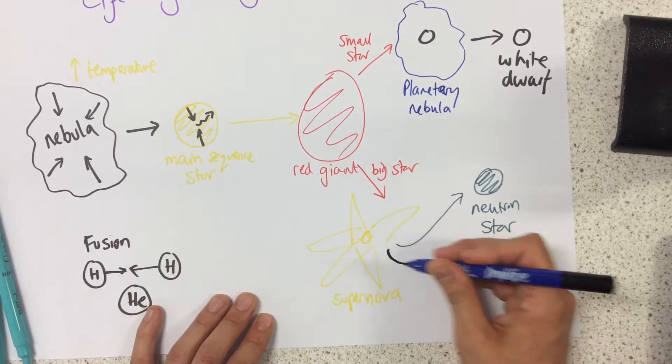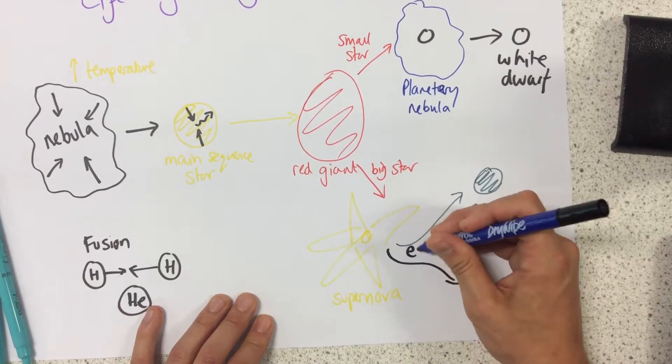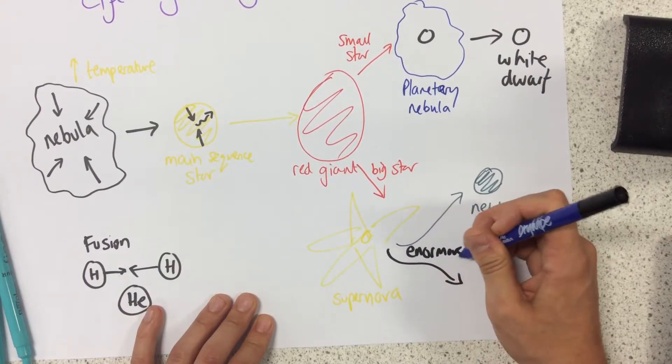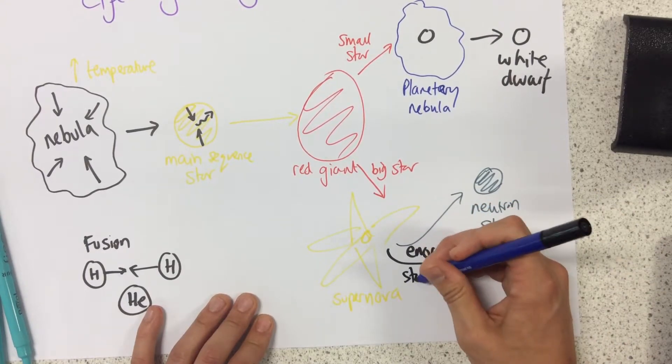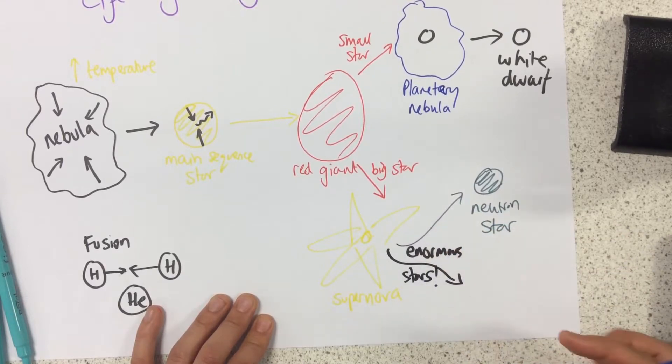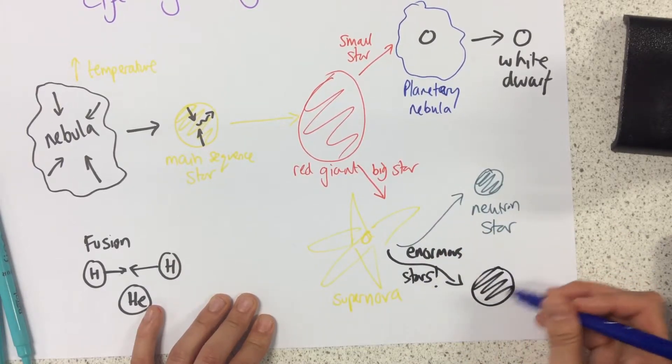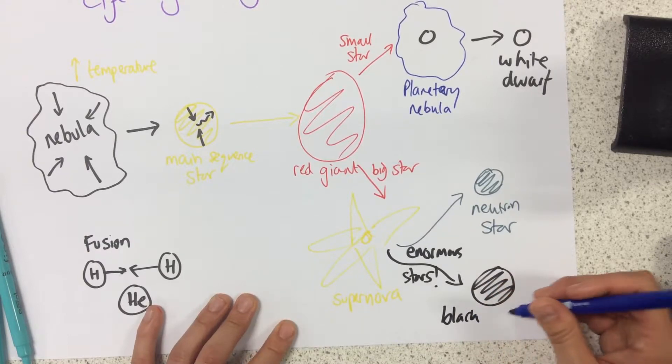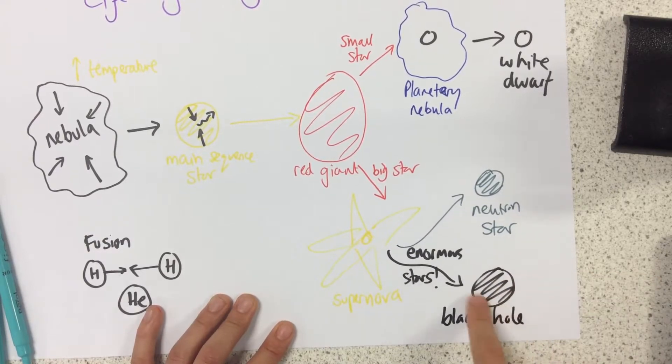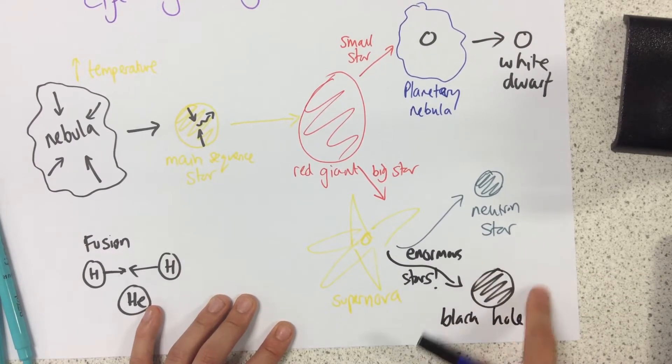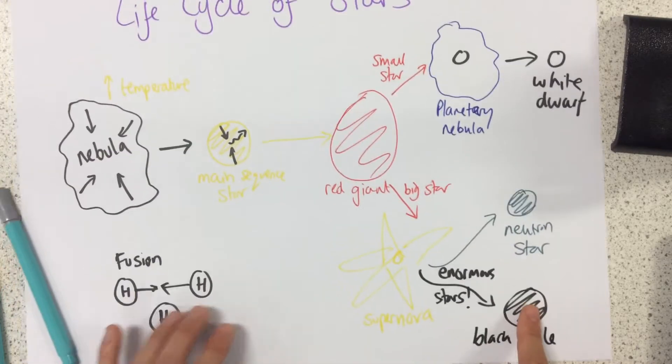The other fate, and this is for enormous stars, absolutely massive stars, we get black holes. Black holes have such a high gravitational pull that not even light can escape them.